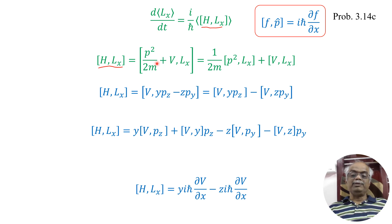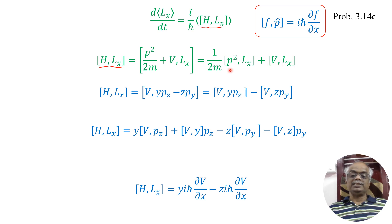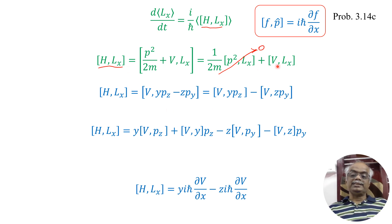We separate [H, Lx] into two commutation relations: (1/2m)[P², Lx] plus [V, Lx]. The first term vanishes because linear momentum and orbital angular momentum commute, so [P², Lx] = 0. The only remaining term is the commutator [V, Lx].